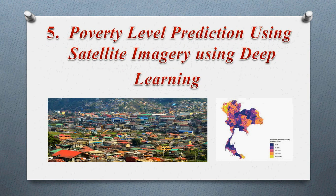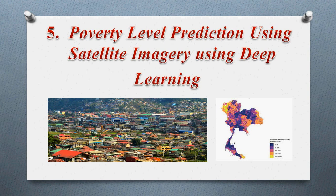The fifth project is poverty level prediction using satellite images with deep learning. For example, satellite images of African countries like Ethiopia and Nigeria are taken, and based on those images the system identifies the level of poverty — whether it is very bad, average, or improving. Multiple images taken by drones or from satellite views are input to the model, and it identifies whether conditions have improved or remain poor.